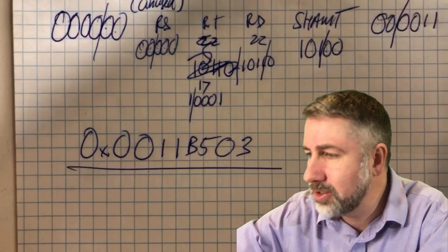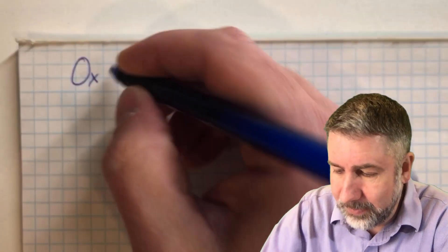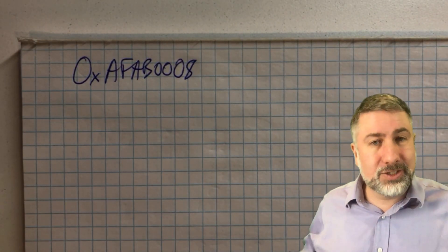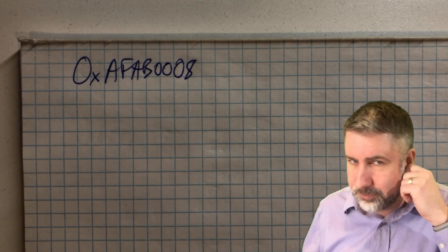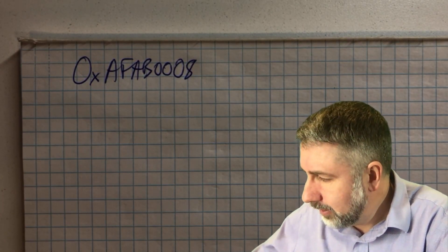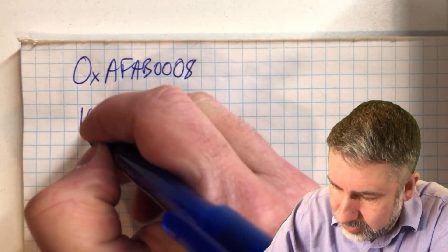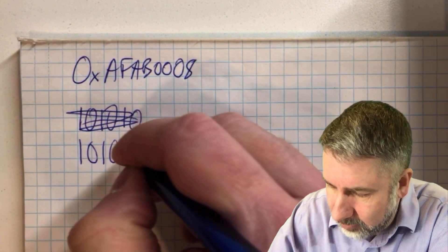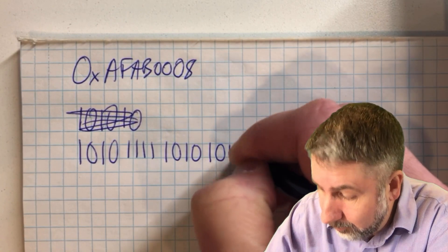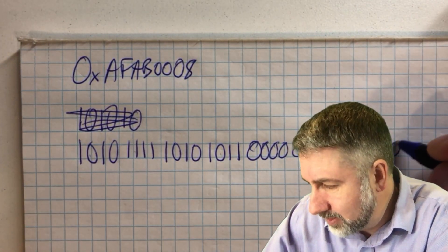Now let's do the reverse process. Imagine we're given the hex value 0xAFAB0008 and we don't know what instruction it is. The question is: what instruction is this? First, convert to binary. A is 1010, F is 1111, A is 1010, B is 1011, then 0000 0000 0000 1000. So the full binary is: 1010 1111 1010 1011 0000 0000 0000 1000.